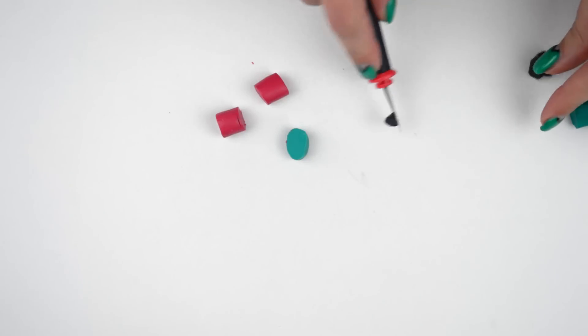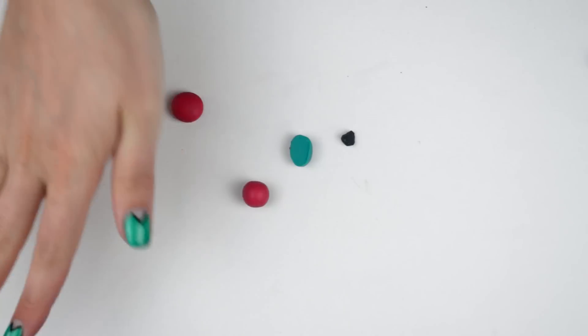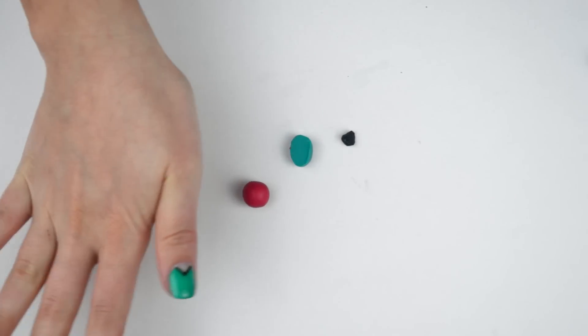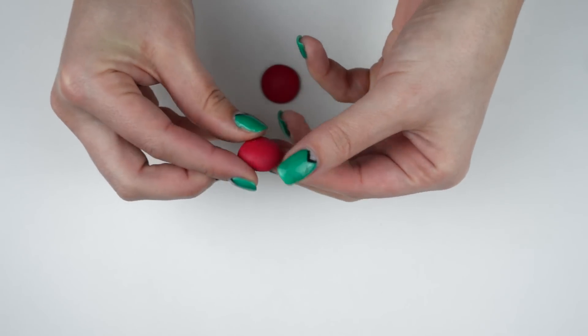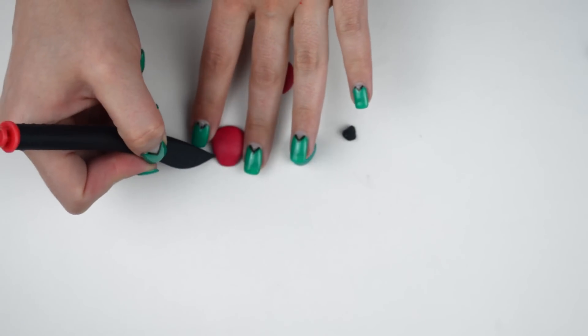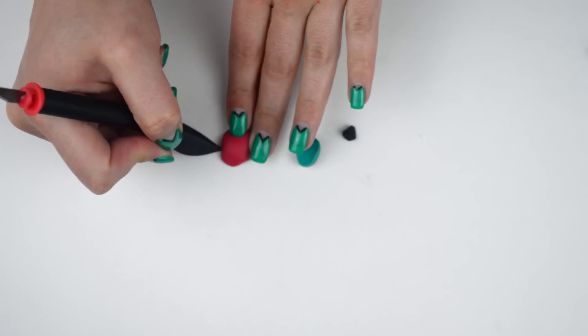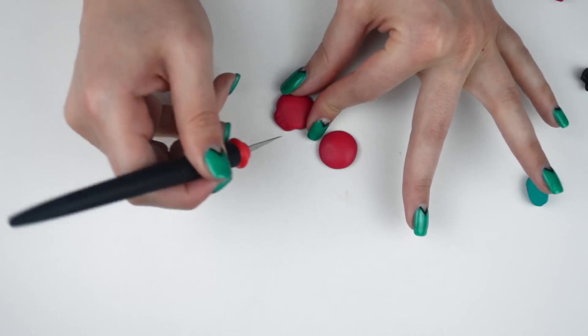We're going to start with a cherry skull collar pin. Flatten down a ball of red clay using your palm. When you get it to the desirable size, pinch it on one side to create the skull jaw. With your exacto, separate what is going to be the teeth.